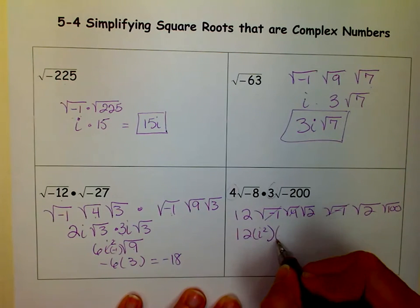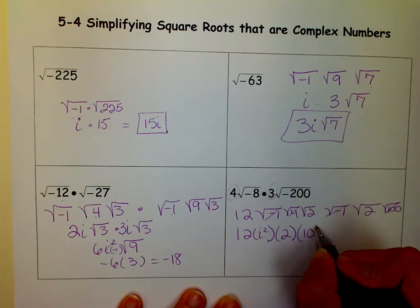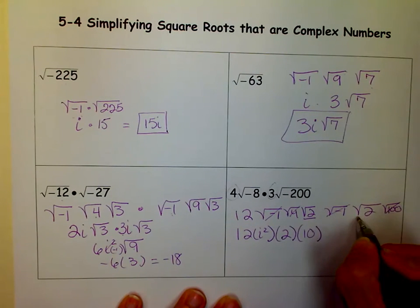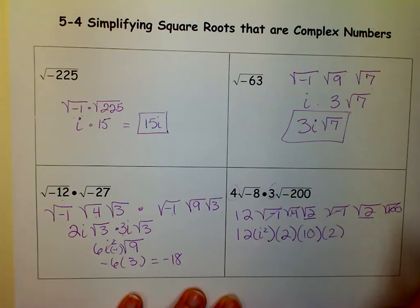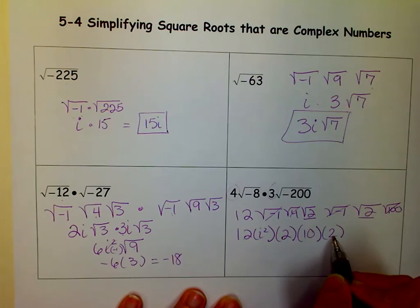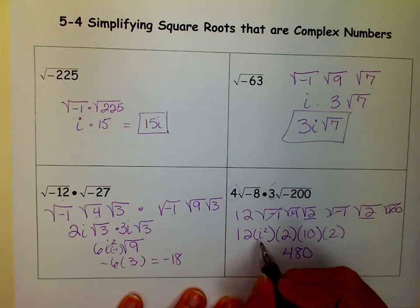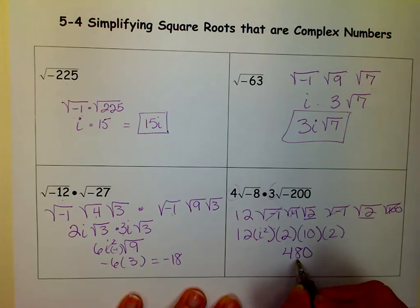This 4, the square root of 4 is 2. The square root of 100 is 10. But then I have 2 square roots of 2. And the square root of 2 times the square root of 2 is 2, because it's the square root of 4, which is 2. So now I have 12 times 2, which is 24, times this 2, which is 48. And then I'll times by 10, because then I'm just adding a 0. And then this right here, i squared is negative 1. So if I multiply this by negative 1, I get a negative 480.